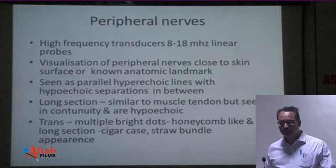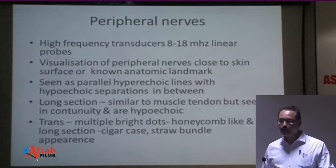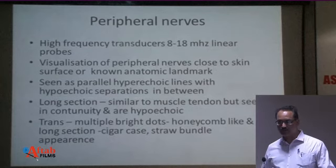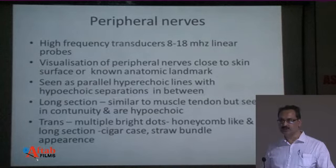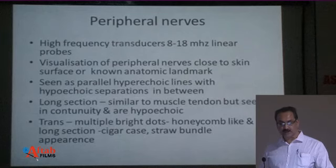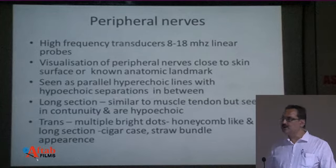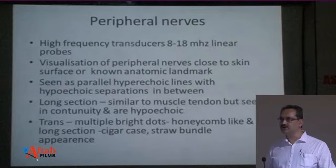To evaluate peripheral nerves on ultrasound, you should use a high-frequency peripheral transducer — an 8 to 18 megahertz linear probe. Visualization should always start from a known anatomic landmark such as the wrist, flexor retinaculum, or the knee joint. You move the transducer to and fro. Nerves appear as parallel hyperechoic lines with hyperechoic separations in between, similar to muscle fibers, but nerve fibers show continuity while muscle fibers show discontinuation.